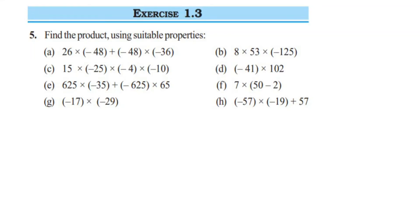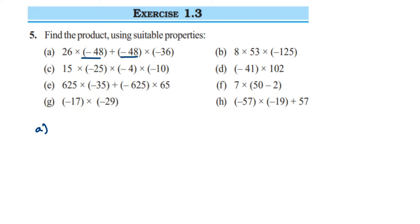Hello everyone, here I am doing Exercise 1.3, fifth question, chapter Integers of Class 7. The question is: find the product using suitable properties. They have given a few questions and we have to use properties like closure property, commutative property, and distributive property to solve them. The first question is 26 multiplied by minus 48.